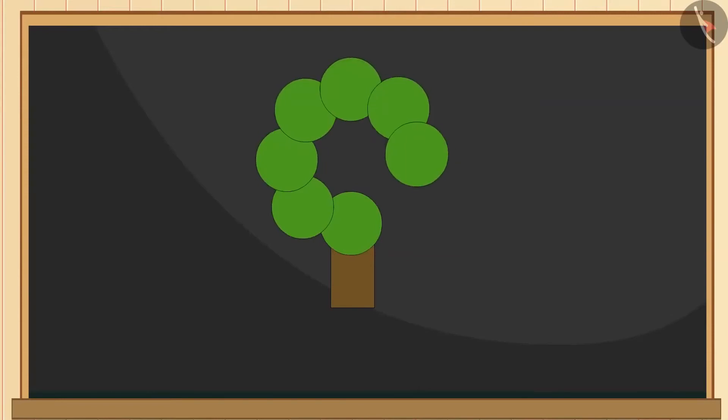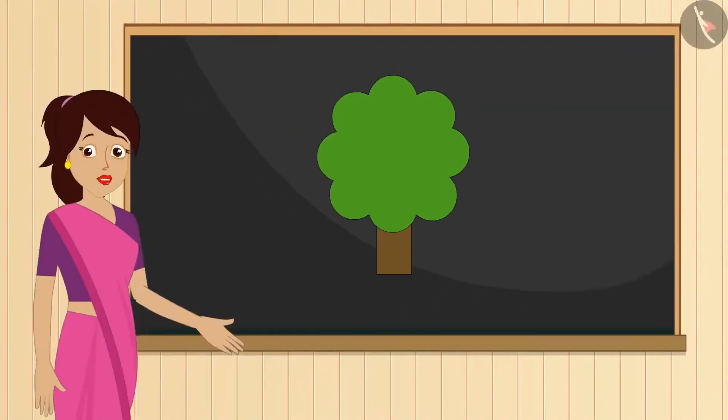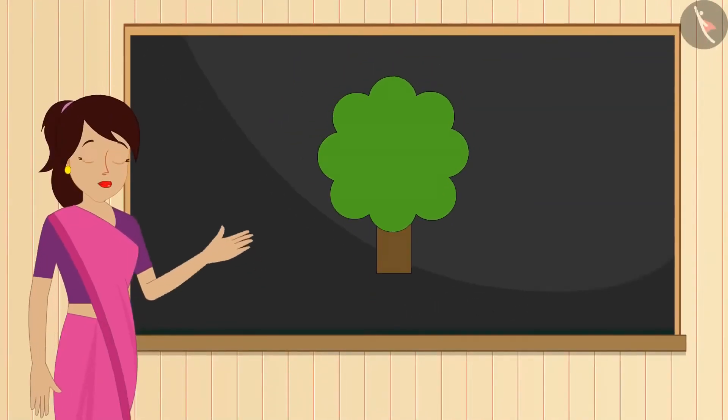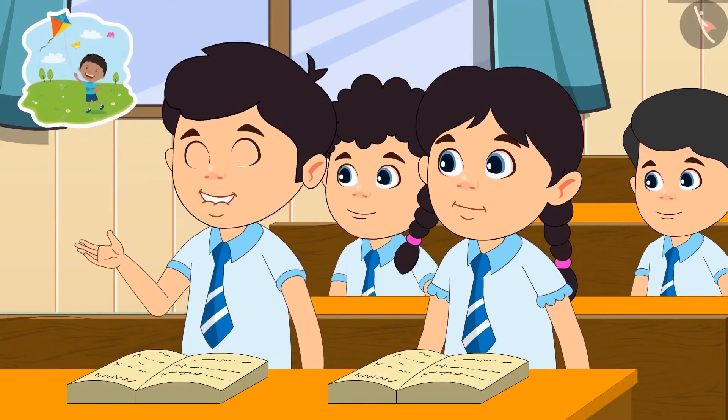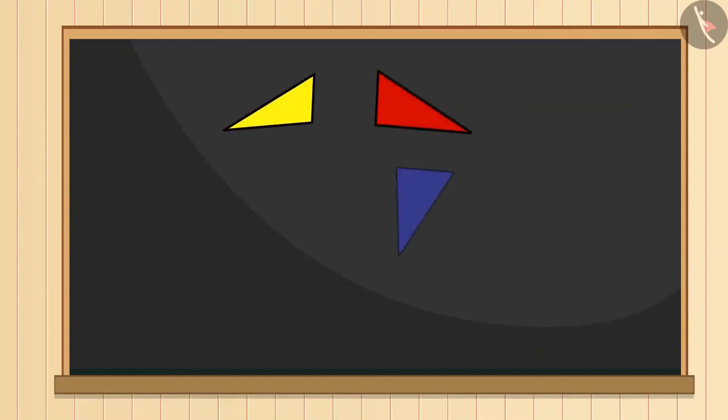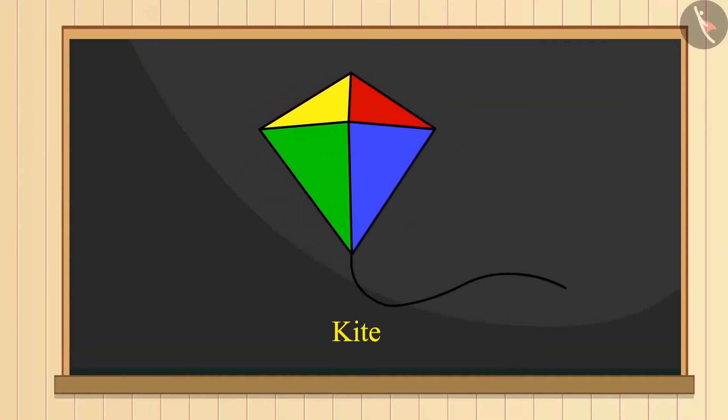First we will make the trunk of the tree with a rectangle. Then we will make eight small circles like this. Now if we join the outer boundary of this shape and erase all the other lines, then it will become the upper part of the tree. So isn't it correct?